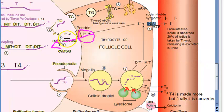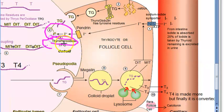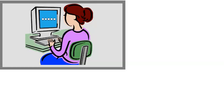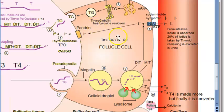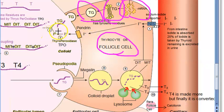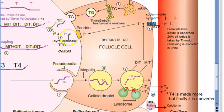In the follicular lumen, iodide is oxidized to iodine by the enzyme thyroperoxidase. At the same time, the follicular cell synthesizes thyroglobulin (TG) — using mRNA — and releases it into the follicular lumen. So two things enter the follicular lumen: iodine (from oxidized iodide) and thyroglobulin, which contains many tyrosine residues.